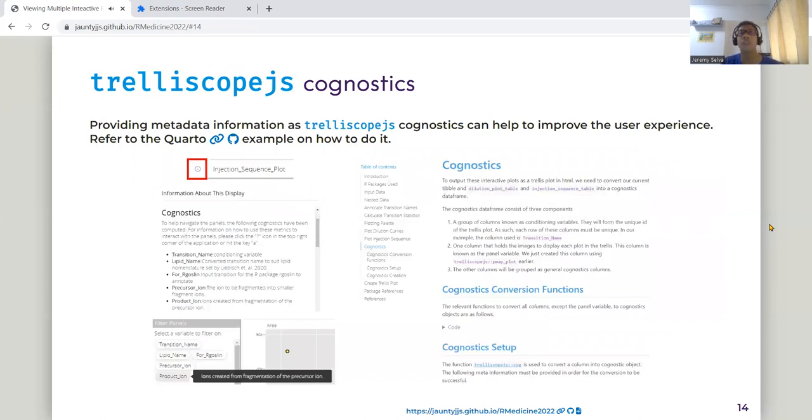Providing metadata information as Trelliscope.js cognostics is important because it helps to improve the user experience, especially for those who are using it for the first time. This information can be displayed when pressing the information button here. On the other hand, you can also be seeing when users hover onto the buttons at the panels. I have provided a step-by-step process of how you can do this in my Quarto example.